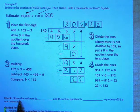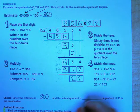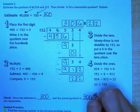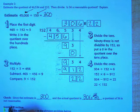To check our answer here it says since the estimate is 300 and the actual quotient is 306 and 22 over 152, a quotient of 36 is not a reasonable answer.